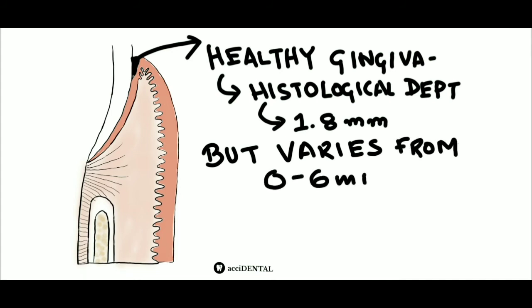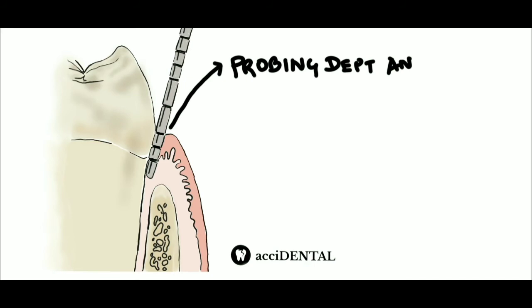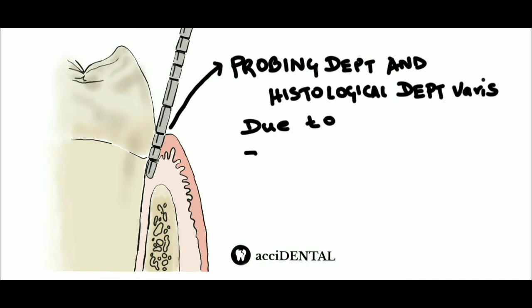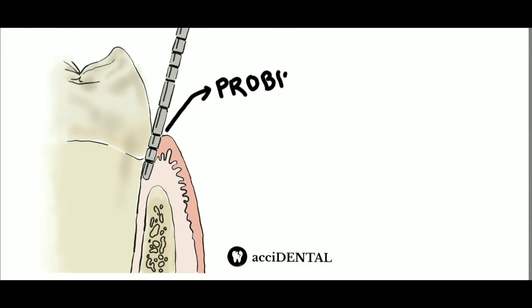How will we determine the depth of our gingival sulcus? By inserting a probe and measuring the distance that it penetrates—that is probing depth. The probing depth and the histological depth vary because of certain factors like probe diameter, probing force, and the level of inflammation. The probing depth in normal human gingival sulcus is 2 to 3 mm.